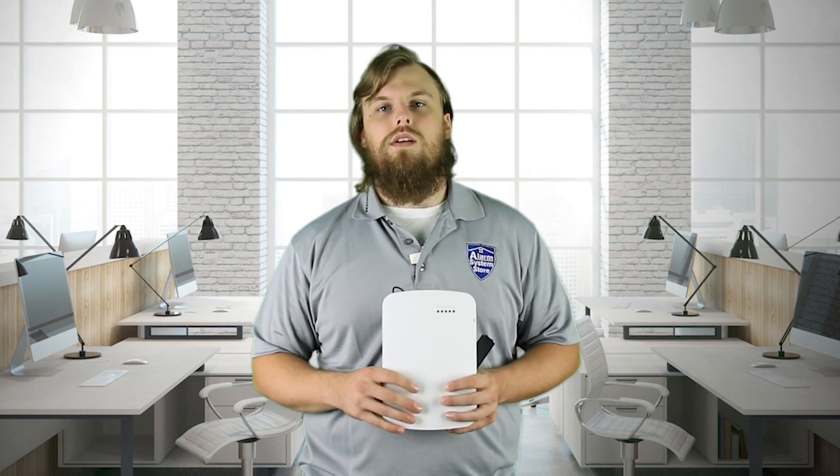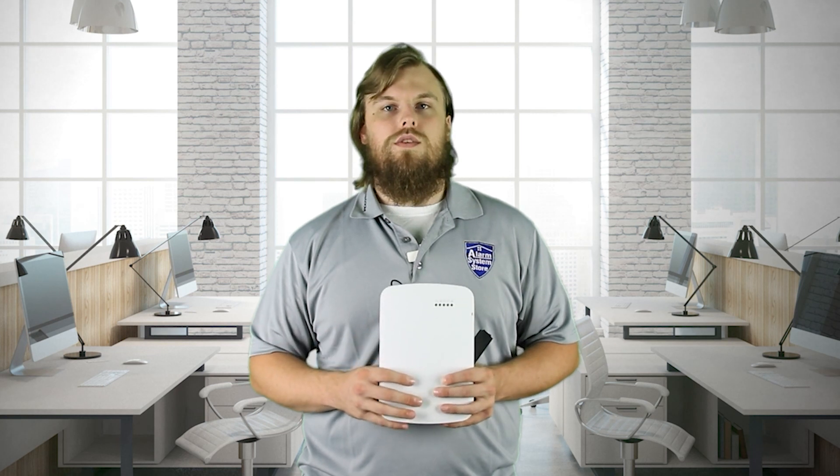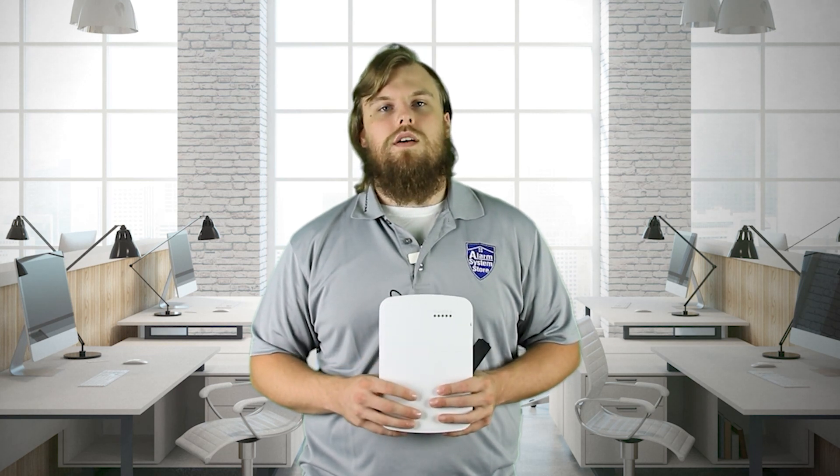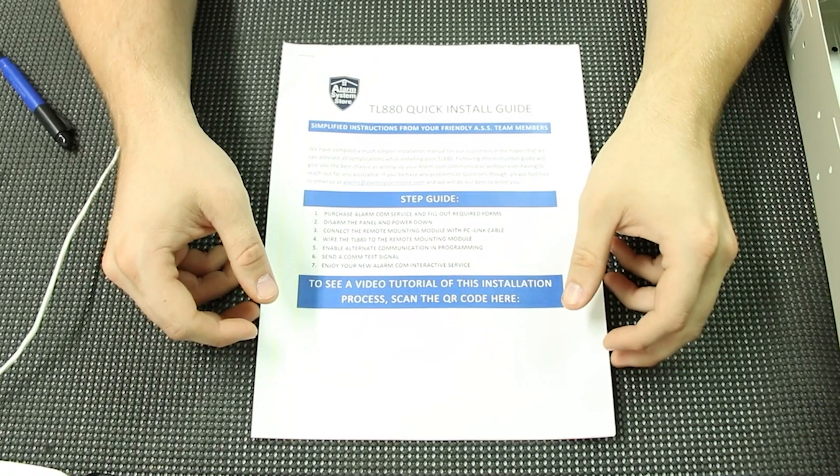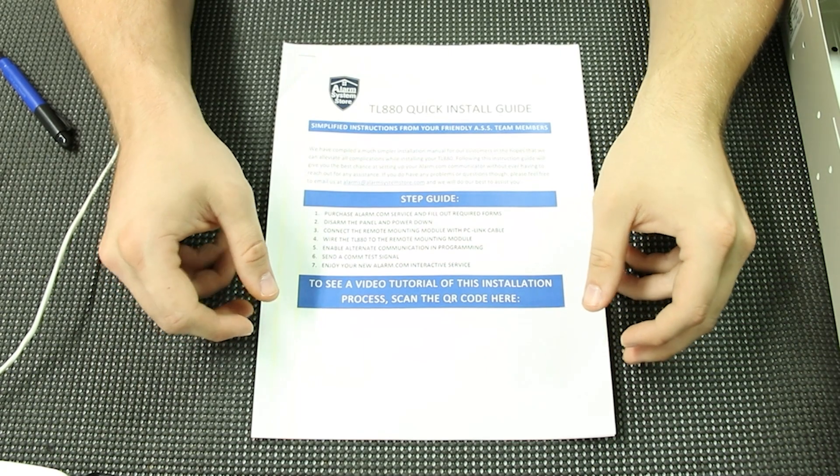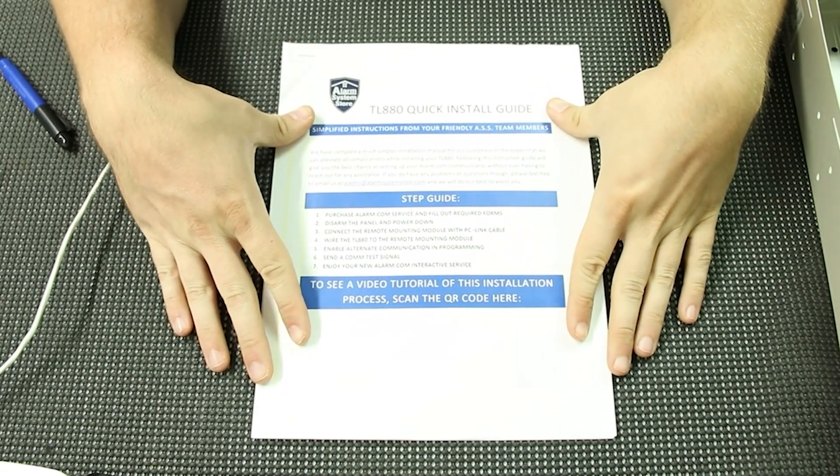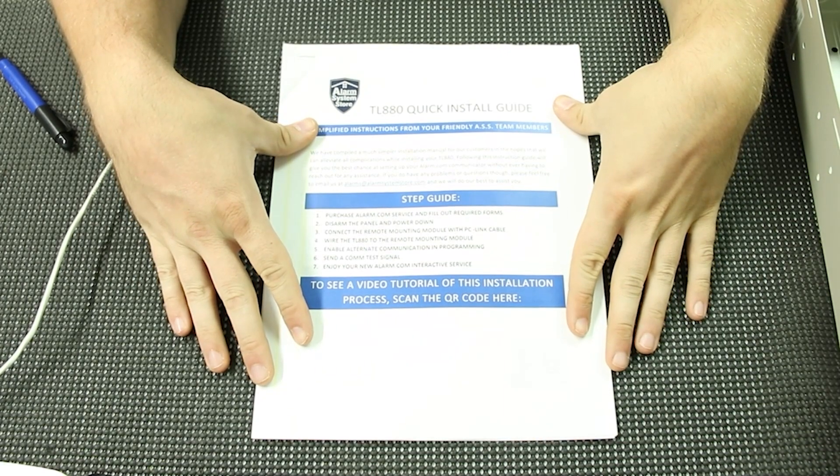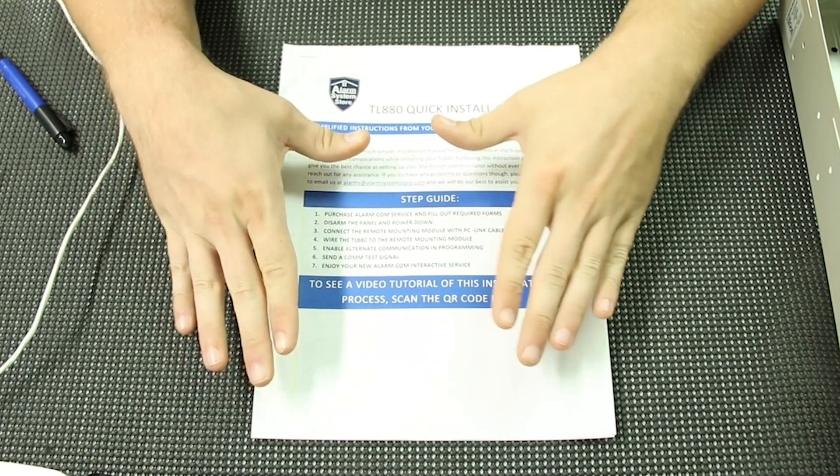Let's hop over the table. I'll show you how that's done, and then afterwards I'll show you how to enable the communicator through programming. Once it's enabled, it does a sync and pulls all your information, sends it to alarm.com, and you will be good to go.